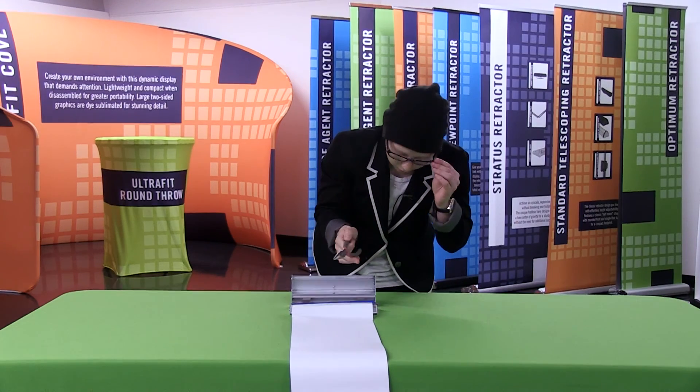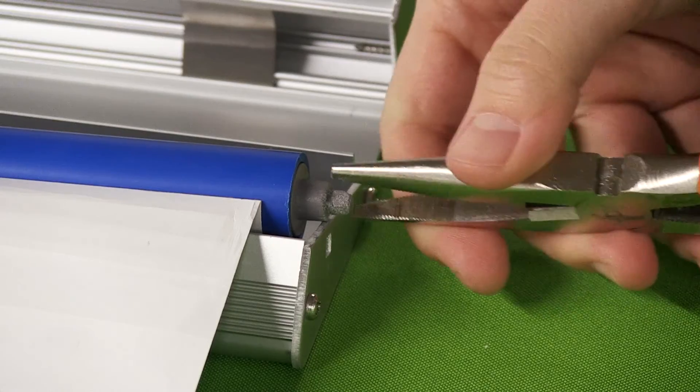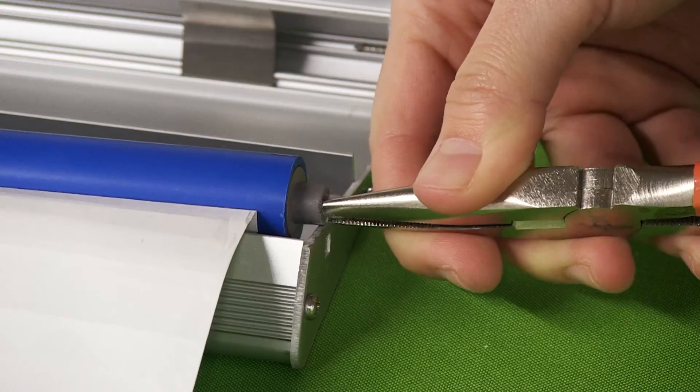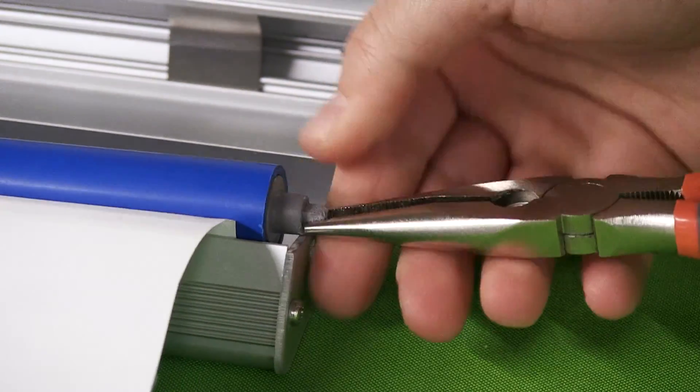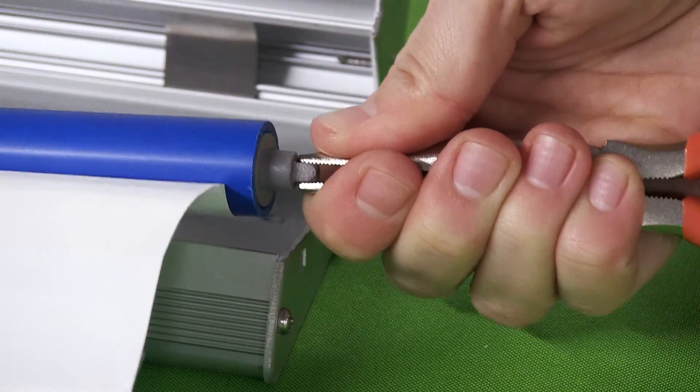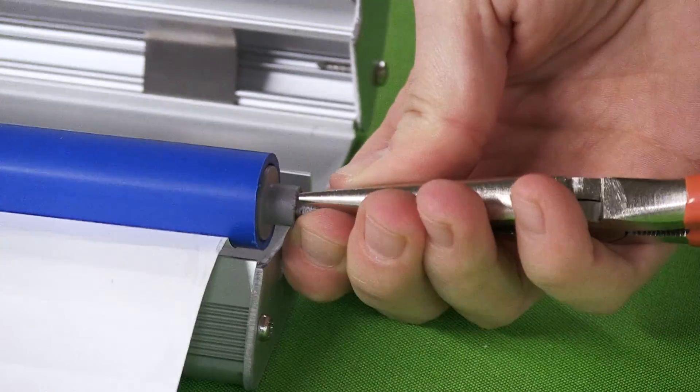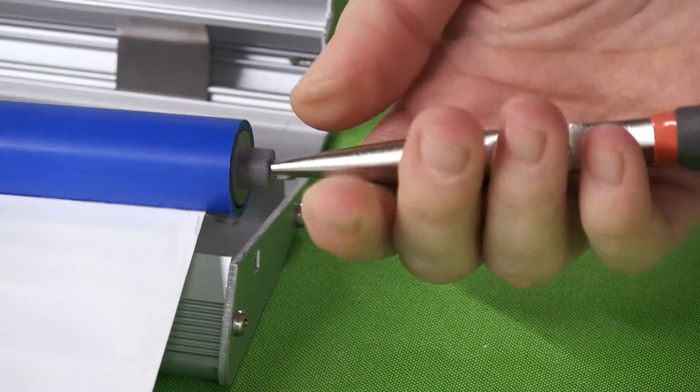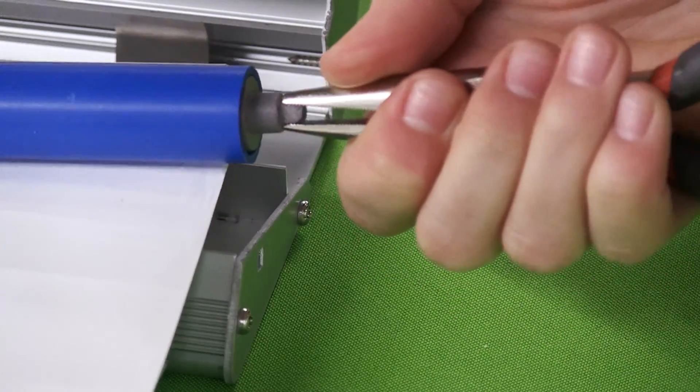So using your needle nose pliers, you're just going to clamp onto the square side of the roller, and I like to go completely horizontal with the roller. Then using your thumb and your pointer finger, you're going to begin to turn the roller.